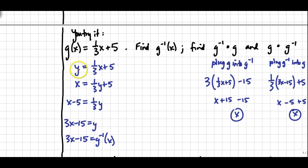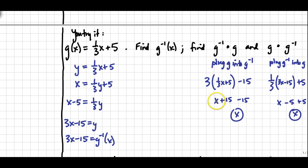Here are the answers. First, replace g(x) with y, switch x and y, and solve for y — giving g⁻¹(x) = 3x - 15. To verify: plug g into its inverse. The inverse looks like 3 times something minus 15; put g, which is ⅓x + 5, in that position. Distributive property: 3 times ⅓ is x, and 3 times 5 is 15, minus the 15 gives just x. Then in the other order, plug the inverse into g: ⅓(3x - 15) + 5 gives x - 5 + 5, which is just x.